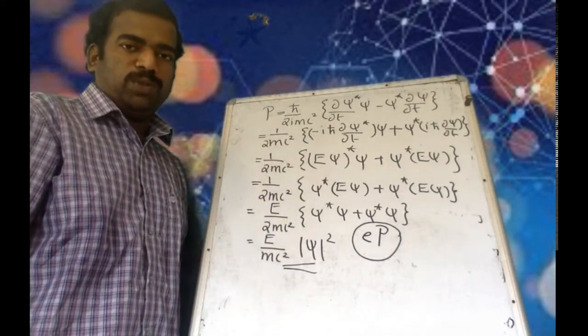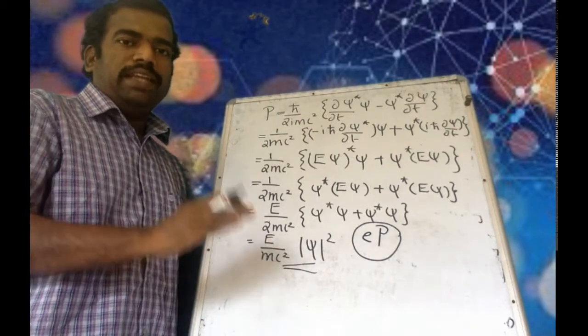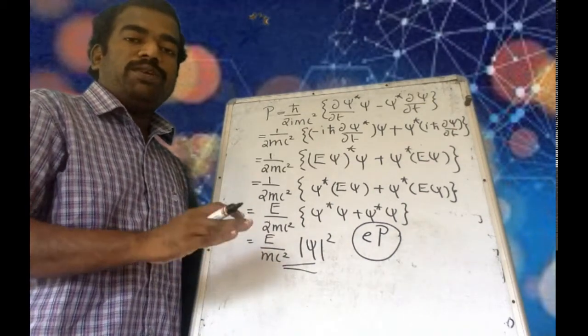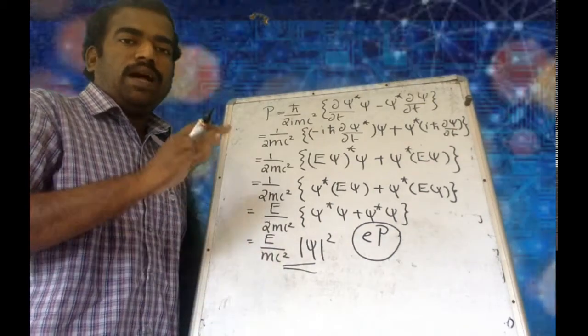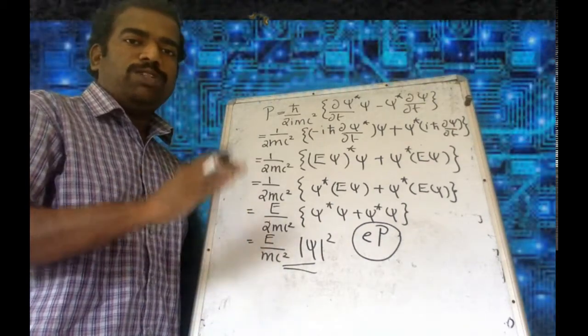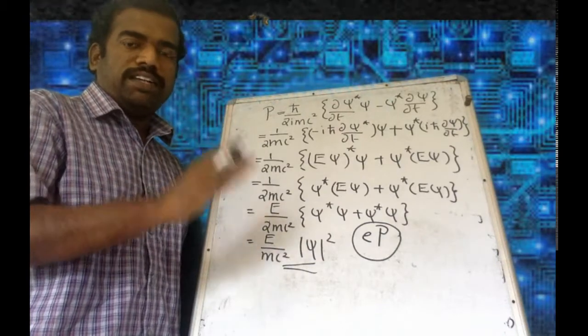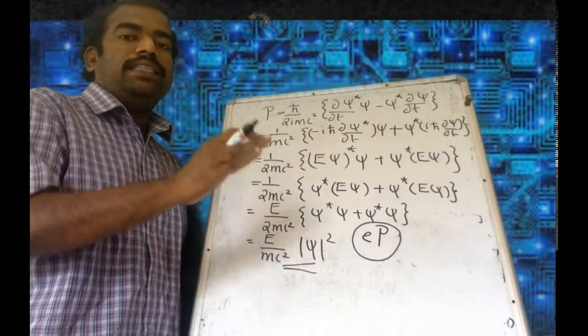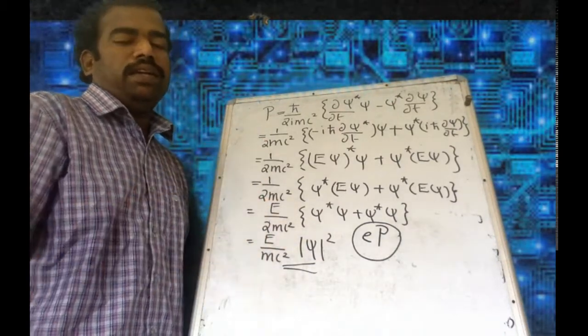So in the final conclusion: the Klein-Gordon equation can be applied only to a system consisting of particles and their antiparticles, such as electrons and positrons, neutrinos and antineutrinos.